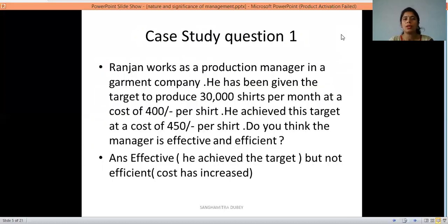I have a case study question. Ranjan works as a production manager in a garment company. He has been given the target to produce 30,000 shirts per month at a cost of 400 rupees per shirt. He achieved this target at a cost of 450 rupees per shirt. Do you think the manager is effective and efficient? The answer is that the manager is effective because he has achieved the target but he is not efficient because the cost has increased.